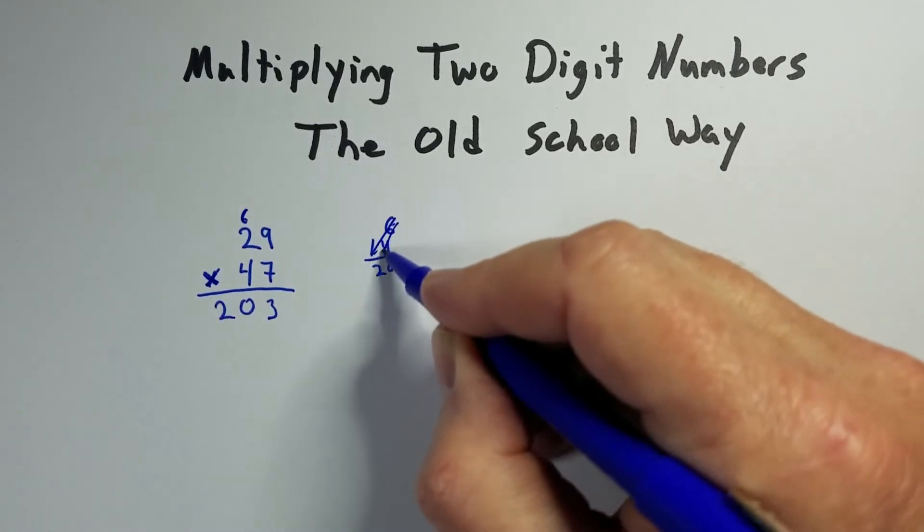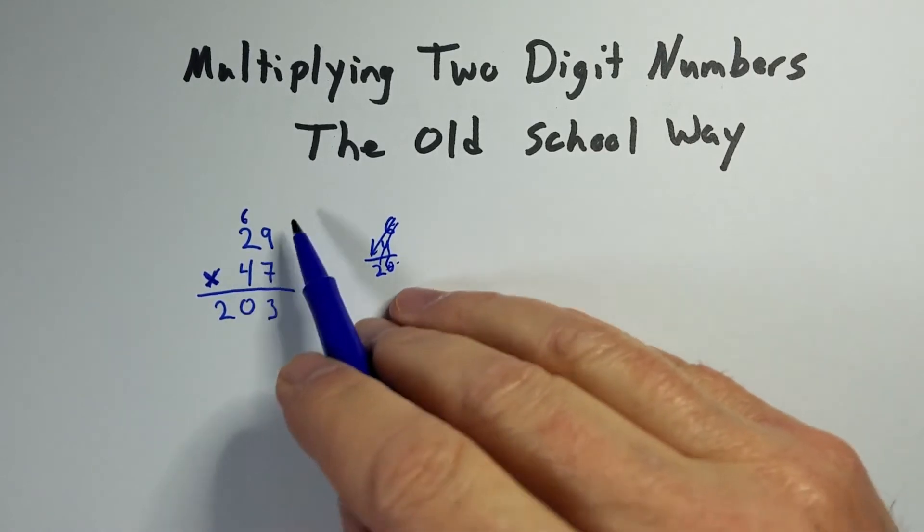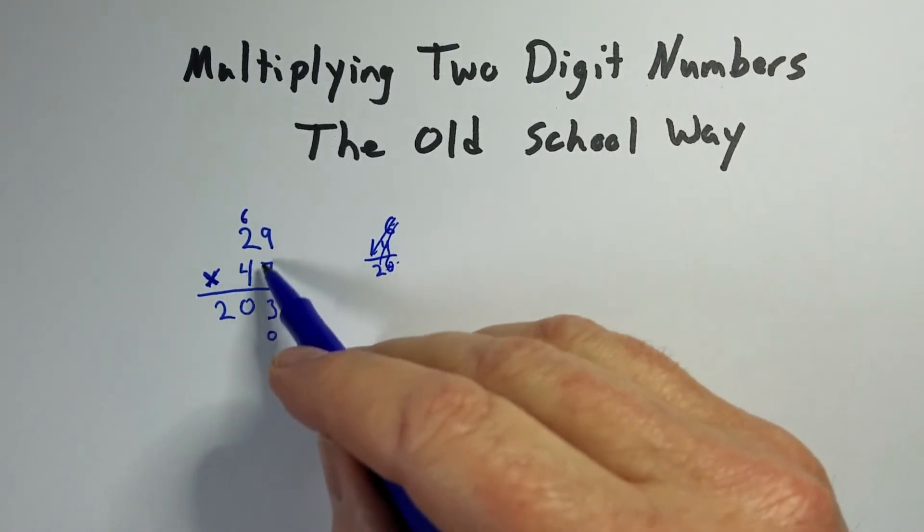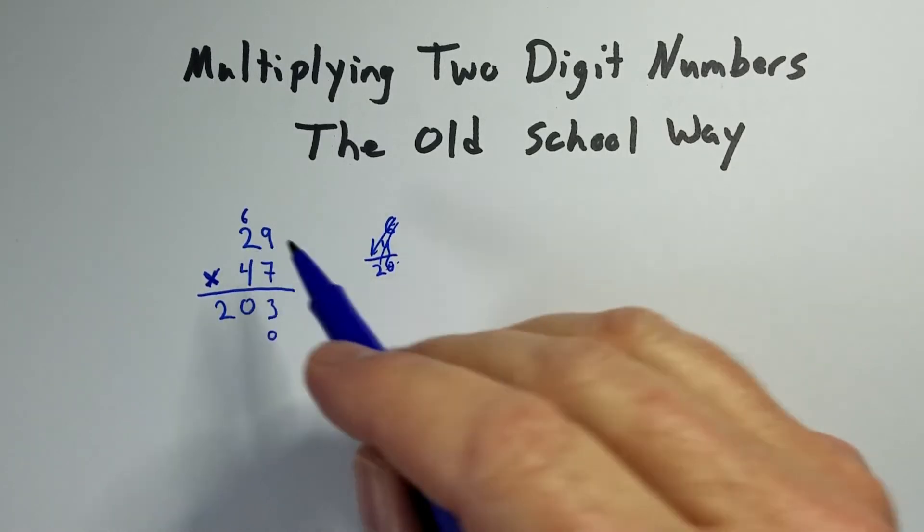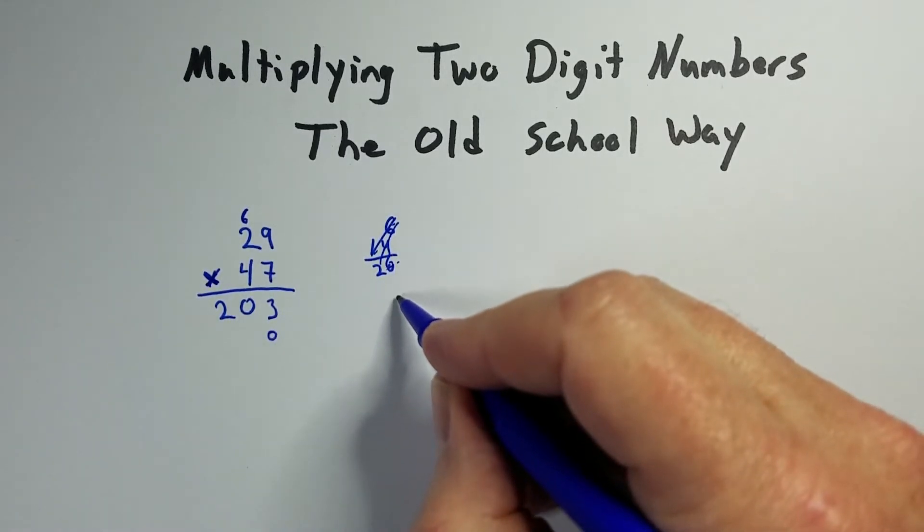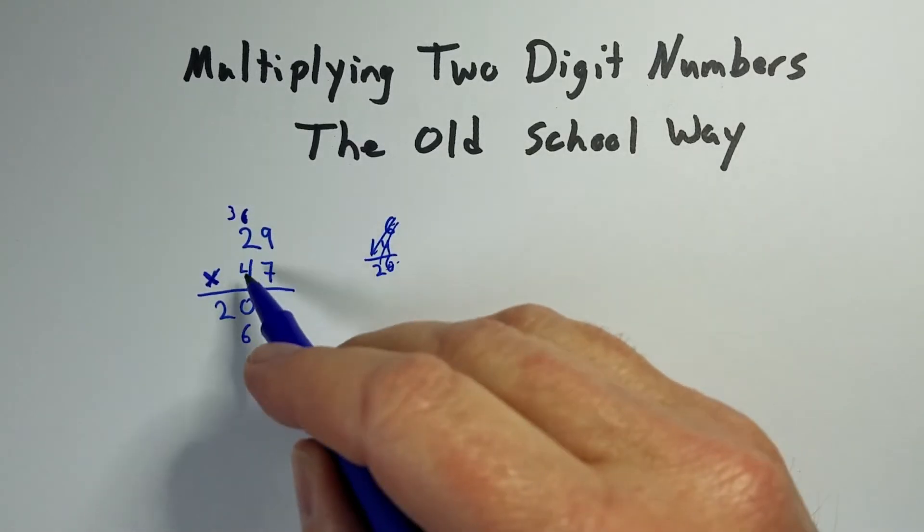And normally we do that in our heads, but I want to try to write it out on the paper. Now we've got that taken care of. We're going to put a 0 there to carry this place, because now we're moving over to the 4. So 4 times 9 is 36. So again, I'm going to put the 6 down. I'm going to put the 3 up, carry it.